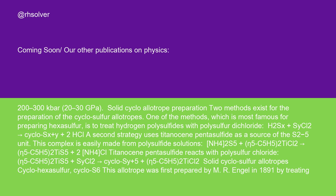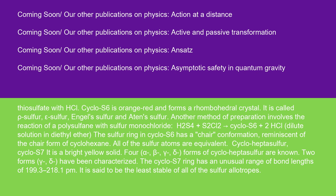Cyclohexasulfur, cyclo-S6: this allotrope was first prepared by M. R. Engel in 1891 by treating thiosulfate with HCl. Cyclo-S6 is orange-red and forms a rhombohedral crystal. It is called rho-sulfur, epsilon-sulfur, Engel sulfur, and aden-sulfur.